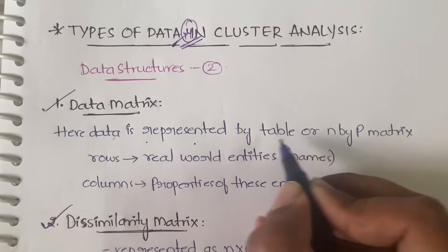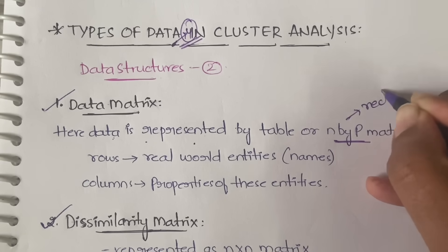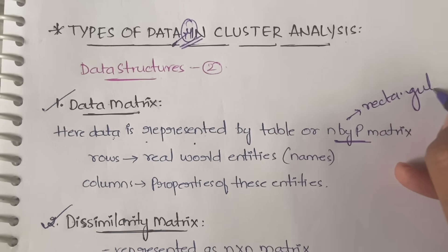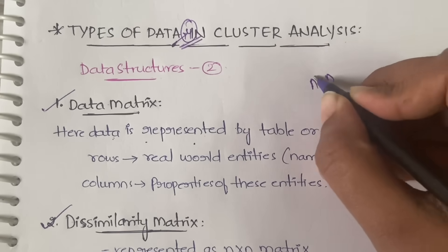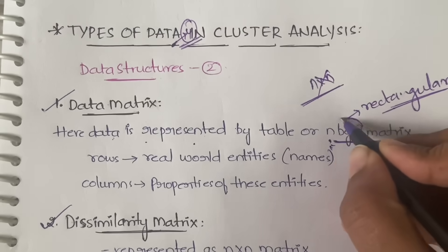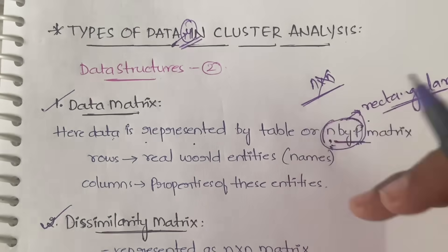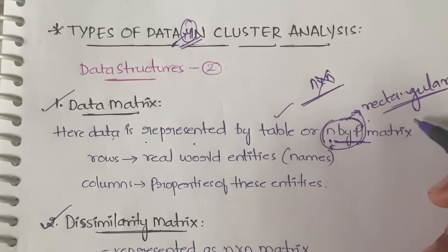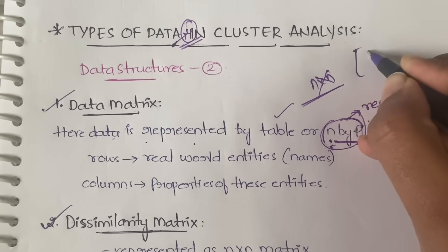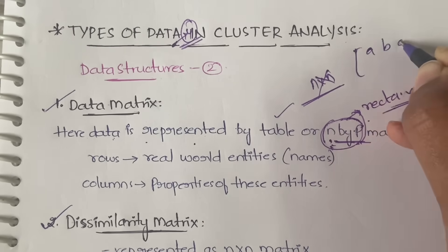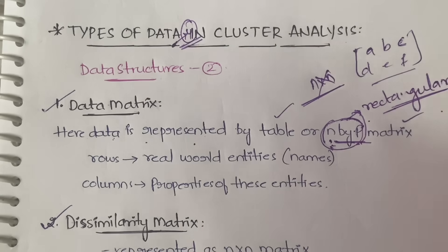In the data matrix, data is represented by a table or an n-by-p matrix. An n-by-p matrix is a rectangular matrix, not a square matrix. In a square matrix you have equal rows and columns (n-by-n), but here we represent data as an n-by-p rectangular matrix.